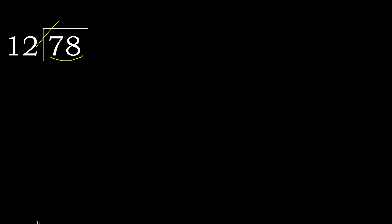12 multiplied by which number is nearest to 78 but not greater. 12 multiplied by 7 is 84, which is greater. Multiply by 6 — 72 is not greater.